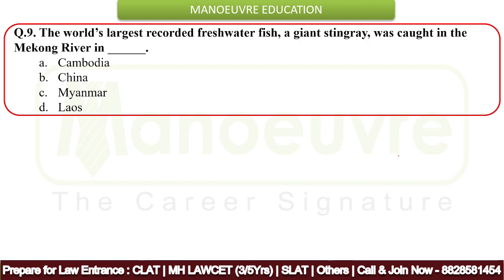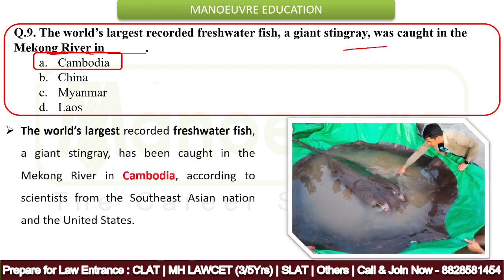Next question: about the world's largest recorded freshwater fish. A giant stingray was caught in the Mekong River. The correct answer is Cambodia. The world's largest recorded freshwater fish — a giant stingray — was caught in the Mekong River in Cambodia, according to scientists from the Southeast Asian nation and the United States.